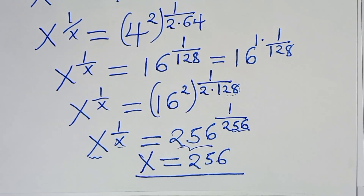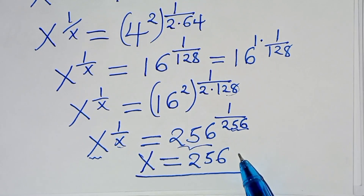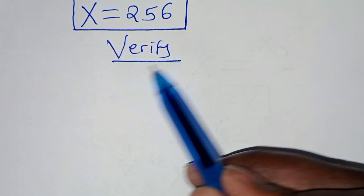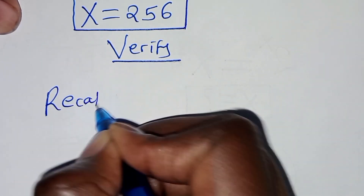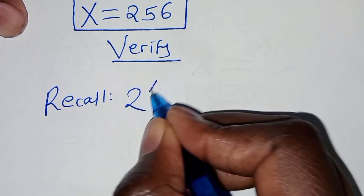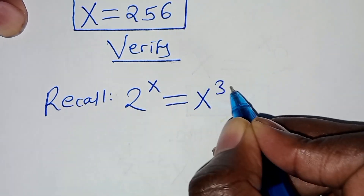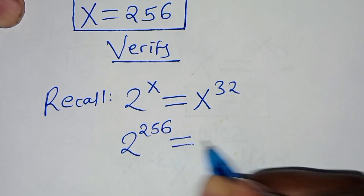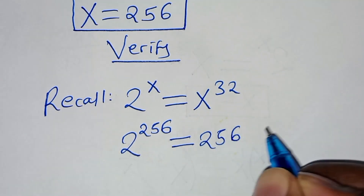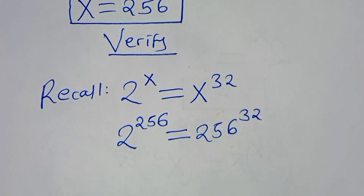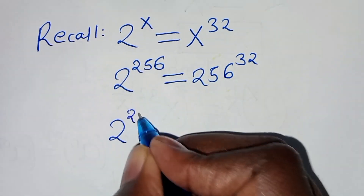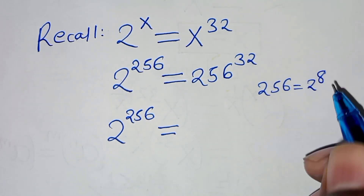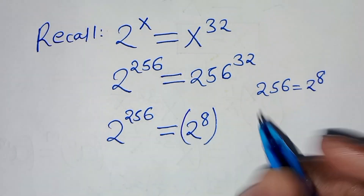The next step is to verify that x equals 256 satisfies the original equation 2 to the power x equals x to the power 32. Substituting, we check 2 to the power 256 equals 256 to the power 32. Since 256 equals 2 to the power 8, the right side becomes 2 to the power 8 raised to the power 32.